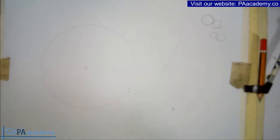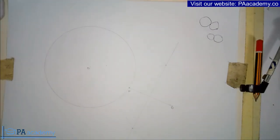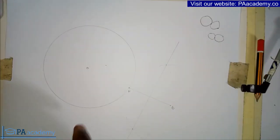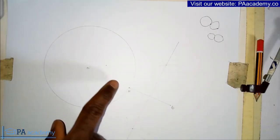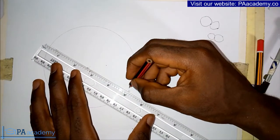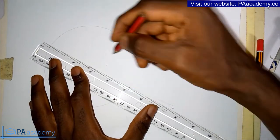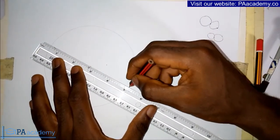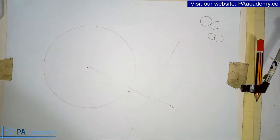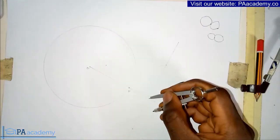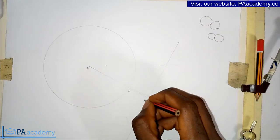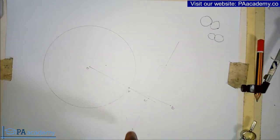The next thing is from point O, you are going to draw a line that will pass through point A and touch the bisector. So from point O it must pass through point A, and it touches the bisector at this point. Let me call that point C.